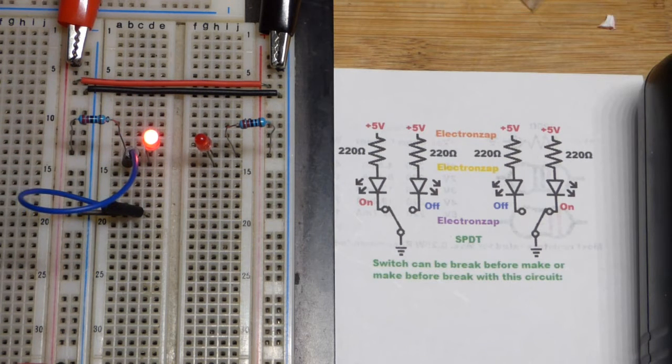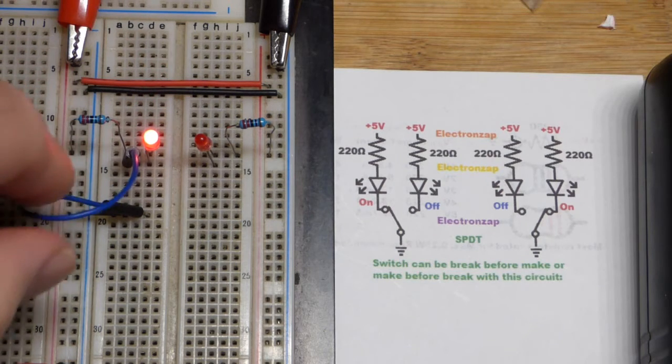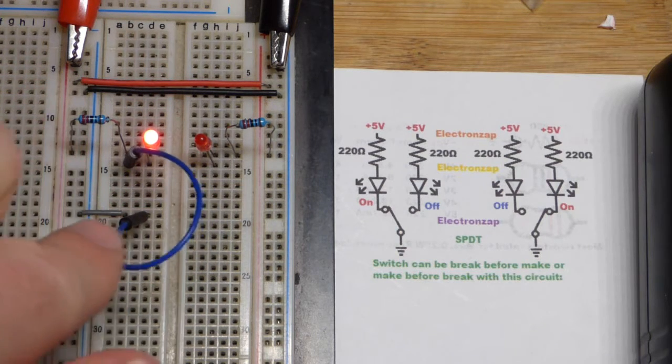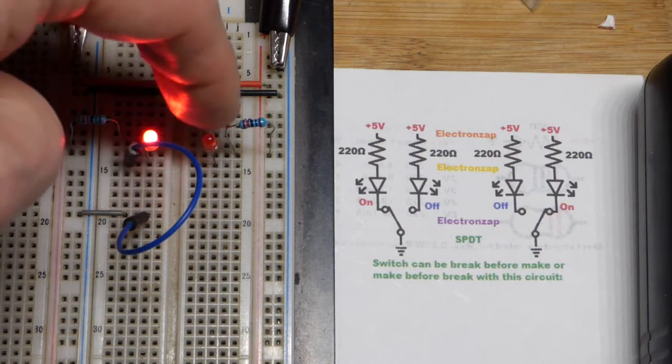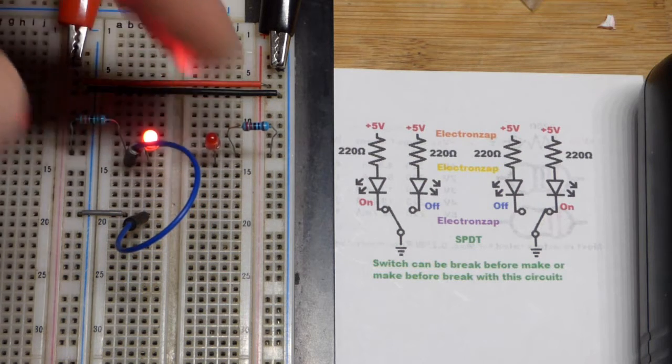So if we had a switch where if you left it alone this LED would always be on, that would be the normally closed position right there and the LED that's off would be normally open.